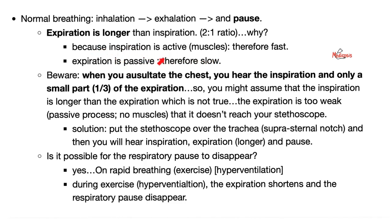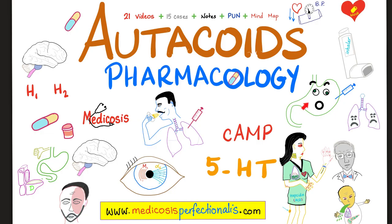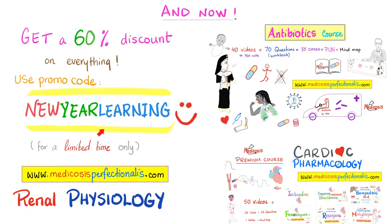If you want to learn about the treatment of asthma and the treatment of peptic ulcer disease, check out my Utacois pharmacology course on my website, medicosisperfectionist.com. If you study in January, you are my friend because you are a unicorn. So here is 60% discount for you. Just use discount code NEWYEARLEARNING at checkout.